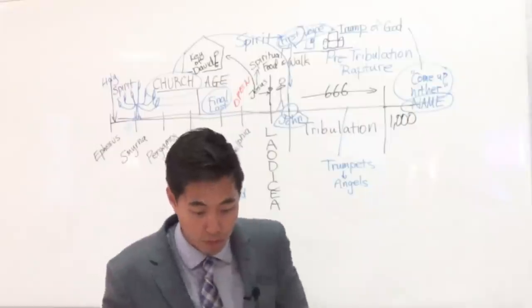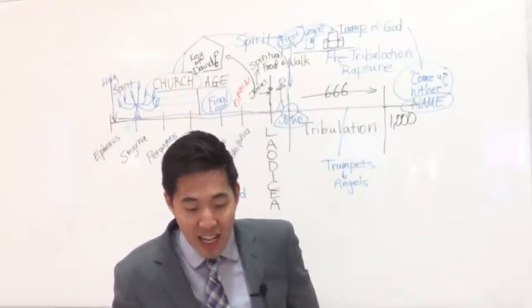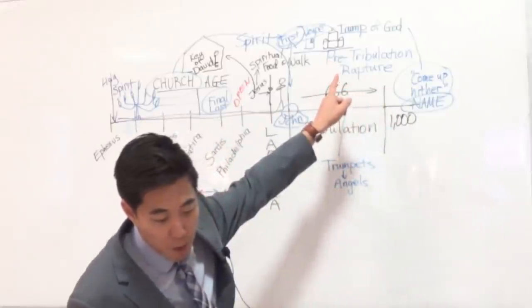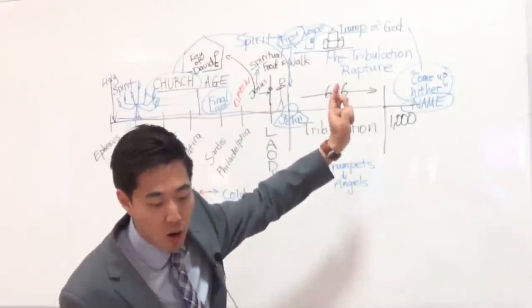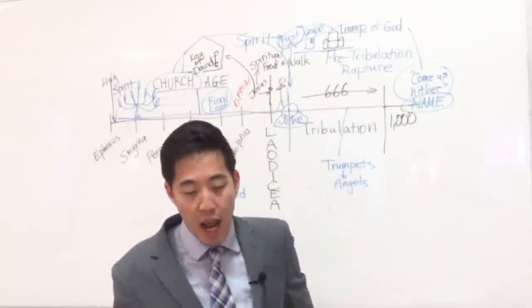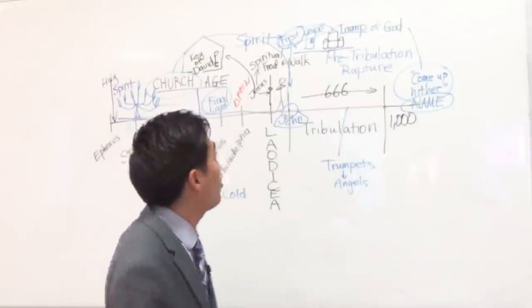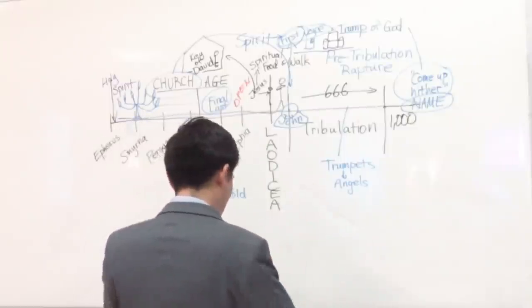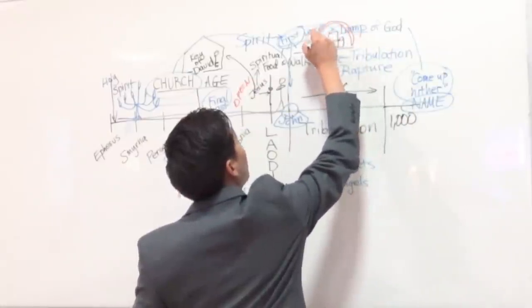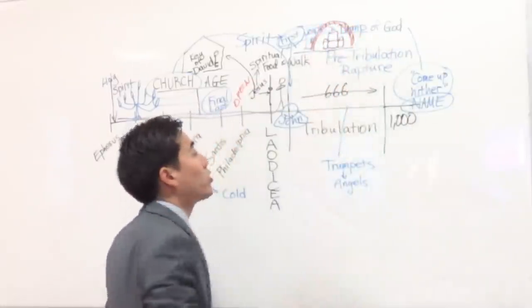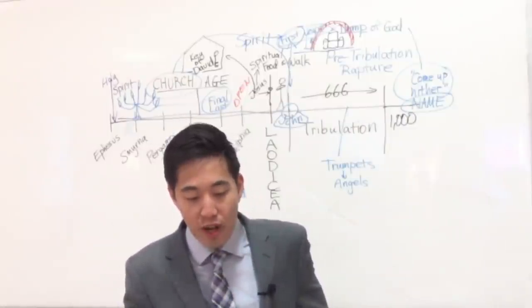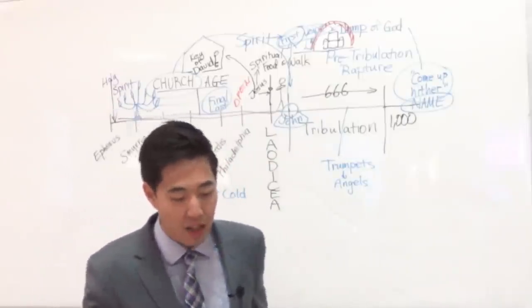I got one more pre-tribulation rapture proof over here if we keep reading. Let's look at Revelation chapter 4 again. Spirit down here with the church, but now the Spirit's up there. Verse 3: And he that sat, so the one who's sitting on the throne, was to look upon like a jasper and a sardine stone. There are two different minerals that God looks like. And there was a rainbow round about the throne. There's a rainbow around the throne of God. Insight like unto an emerald.